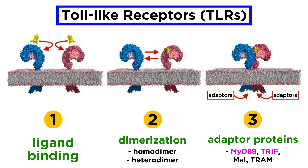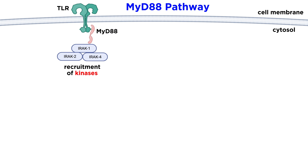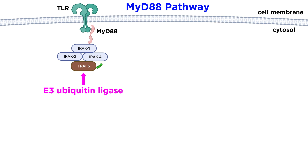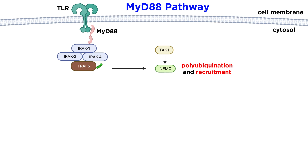Let's discuss the differences between the signaling cascades of the two major adapter proteins, MyD88 and Trif. The MyD88 pathway begins when the cytoplasmic tails of dimerized TLRs are brought together, allowing MyD88 to bind. Here, MyD88 recruits the kinases IRAC4, IRAC1, and IRAC2. The IRACs phosphorylate and activate TRAF6. TRAF6 is an E3 ubiquitin ligase, which is a type of enzyme that tags other proteins with ubiquitin groups. TRAF6 polyubiquitinates itself and the protein NEMO, which recruits and activates TAC1.